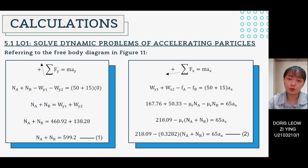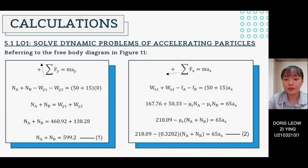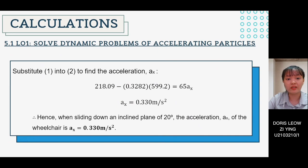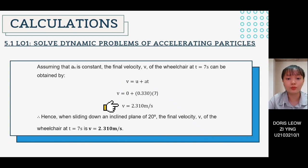By referring to the free body diagram in figure 11, we apply summation of fy equals m·ay, and since ay equals zero, we obtain the summation of normal forces equal to 599.2 N, labeled as equation 1. Applying summation of fx equals m·ax gives equation 2. Substituting equation 1 into equation 2 yields an acceleration of 0.33 m/s². To find the final velocity at t equals 7 seconds, using v equals u plus at, the final velocity of the wheelchair is 2.31 m/s.